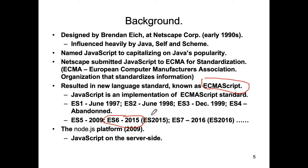The ES6 or ES2015 specification introduced classes to the JavaScript language. In fact, classes in JavaScript are not native at all — unlike Java, for example, where classes are native to the language. In JavaScript they're actually converted back to functions behind the scenes.